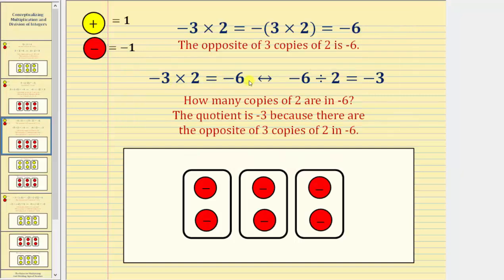The corresponding quotient is negative 6 divided by 2 equals negative 3. Negative 6 divided by 2 is asking: how many copies of 2 are in negative 6? The quotient is negative 3, which we view as the opposite of 3 copies of 2, because there are the opposite of 3 copies of 2 in negative 6.